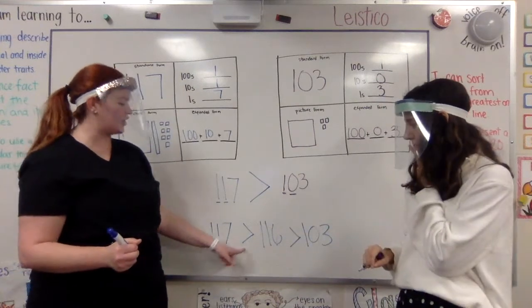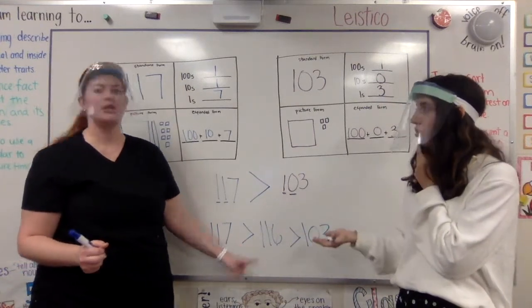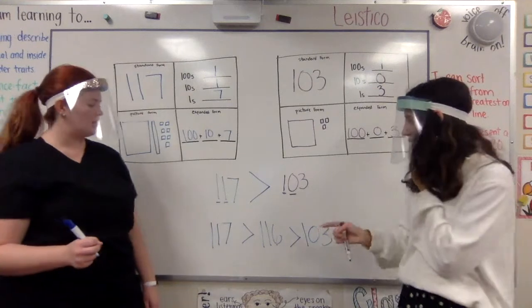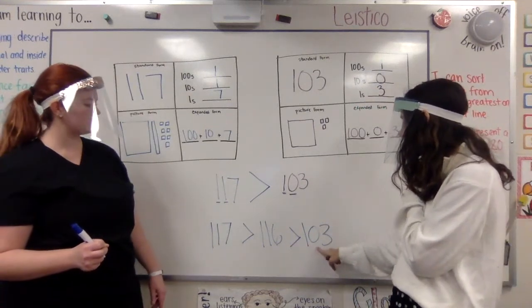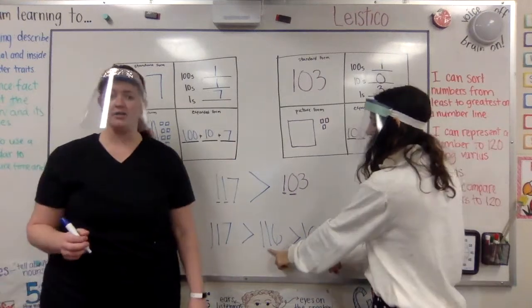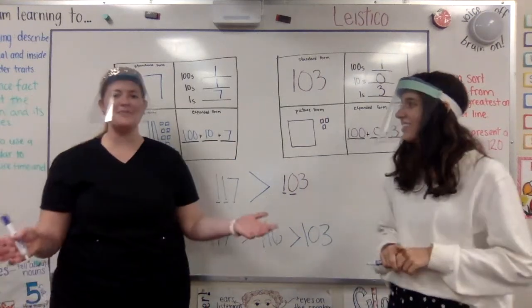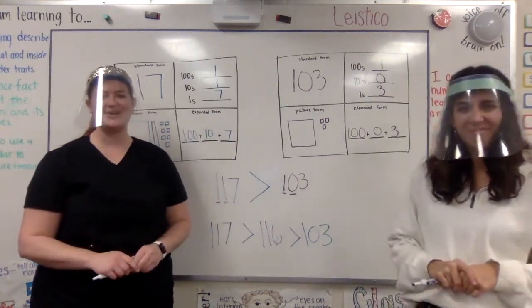Let's see if this makes it true. 117 is greater than 116. Well, that's true. Yeah, that's true. Okay. 116 is greater than 103. Oh, that's true as well. That is. Wow. That was a great strategy, Ms. Lustico.